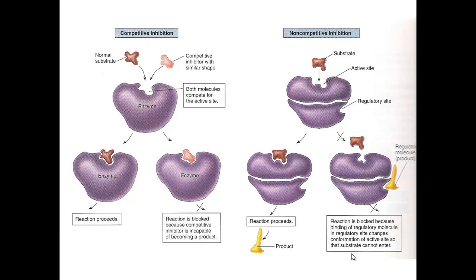Enzymes can be inhibited, and usually this inhibition is done by the cell itself to shut down enzymes when they're no longer needed. With a competitive inhibitor, which has generally the same shape as the normal substrate, both can fit into the enzyme's active site. If the normal substrate fits in, the reaction proceeds; if the competitive inhibitor fits in, the reaction is blocked. The overall effect of the competitive inhibitor is to lower the rate of enzymatic reaction.